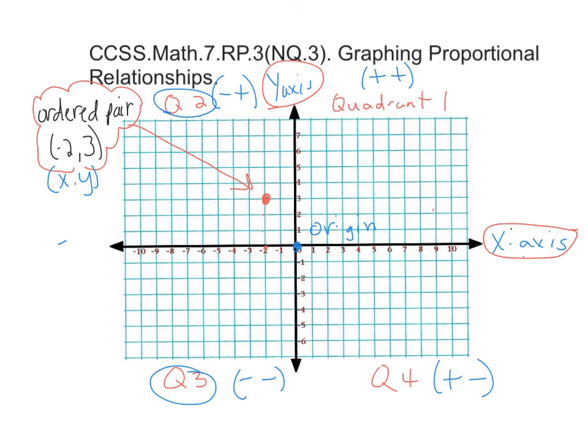And another thing, to test for proportionality in graphing, you can just look at a graph. And if indeed it goes through the origin and is a straight line, goes through the origin, it is proportional.